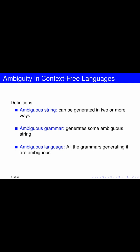If, given a context-free grammar, we have a string that can be generated in two or more ways, we will say that the string is ambiguous. And if such a string exists, this means that the grammar is also ambiguous — so the grammar is ambiguous if there exists some string that can be generated in different ways.